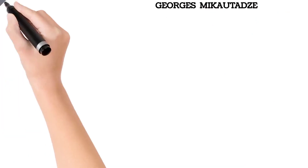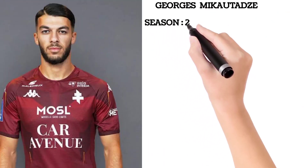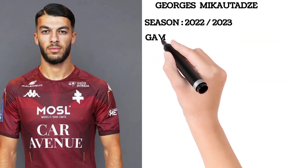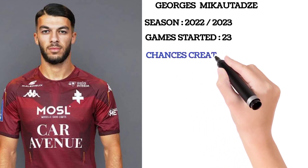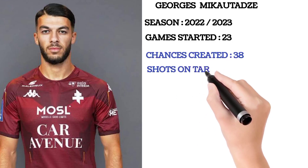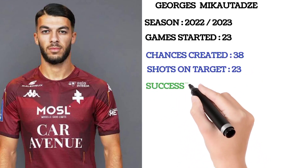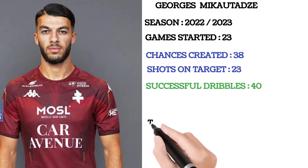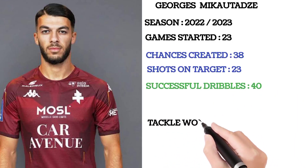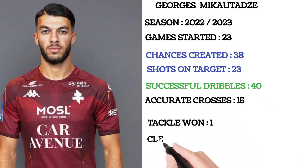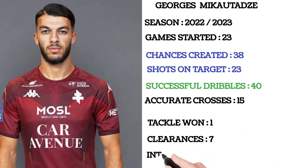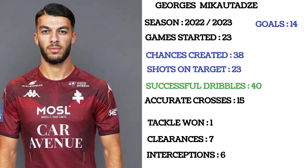In the current 2022-2023 season: games started — 23 (good); creating chances — 38 (good); shots on target — 23 (good); dribbles — 40 (very good); tackles — 1; accurate crosses — 15; clearances — 7; interceptions — 6 (good). Goals scored: 14; assists: 6.